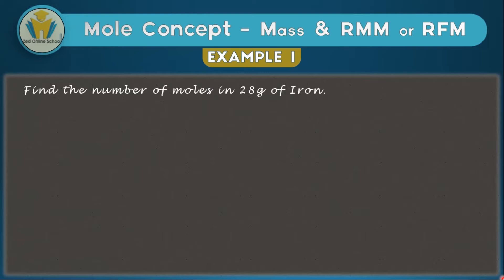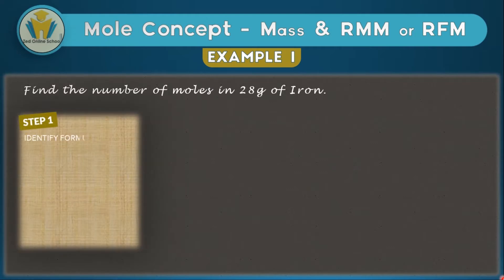The first question asks us to find the number of moles in 28 grams of iron. In this video we'll be following a sequence of steps to get mole concept questions correct. Step one is identifying the formula to use. We have four formulas in total. In this part, we check if we've got masses — and there's only one formula that involves masses, which is n = m/Mr. So whenever we have masses in the equation, we use this formula.